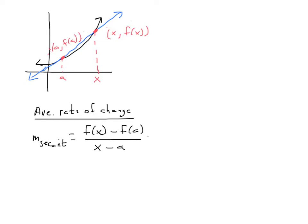The way we go about finding the tangent line is as we move x closer to a — in other words, we're going to be looking at a limit. As x goes closer and closer to a, this point moves down closer and closer, and the secant line gets closer and closer to a tangent line. So the slope of that tangent line is equal to the limit as x approaches a of f(x) minus f(a) over x minus a.